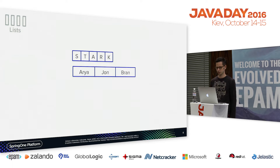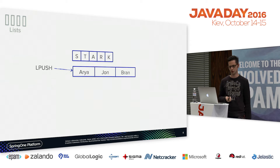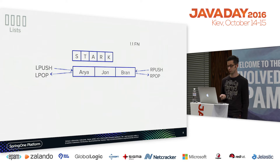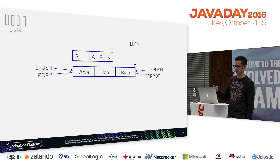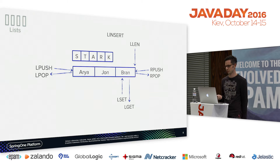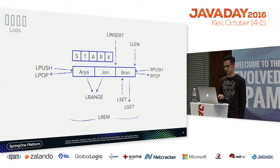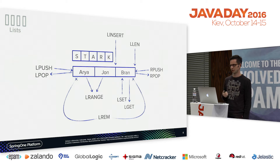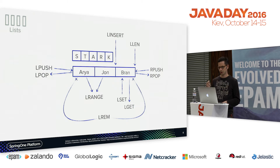The list data structure works like Java's List — you can have duplicates. You can add stuff on the left and use LPOP to remove and get it. You can push to the right and remove from there as well. You can ask how many elements are in the list, set elements at a given position, get by position, insert, get ranges, and remove from either the left or right a number of values — the positive or negative prefix decides which side.